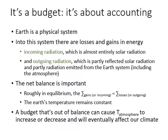The Earth is a physical system and into the system there are losses and gains in energy. The inputs are almost entirely solar radiation — incoming radiation is the one input. Remember in the water balance we had one input which was precipitation and many different ways that water went out again. It's the same with energy: solar radiation is the main input to the system and the output is outgoing radiation, which could be many different forms.